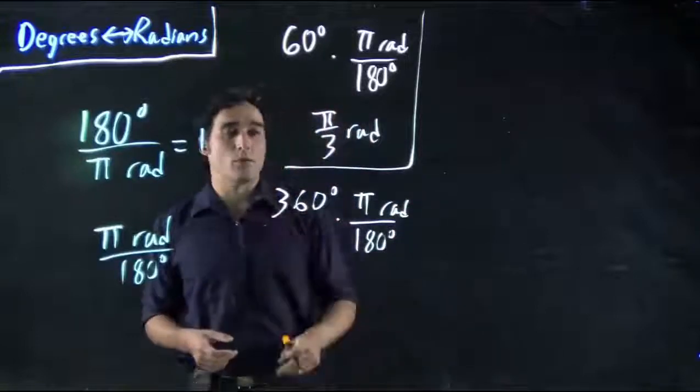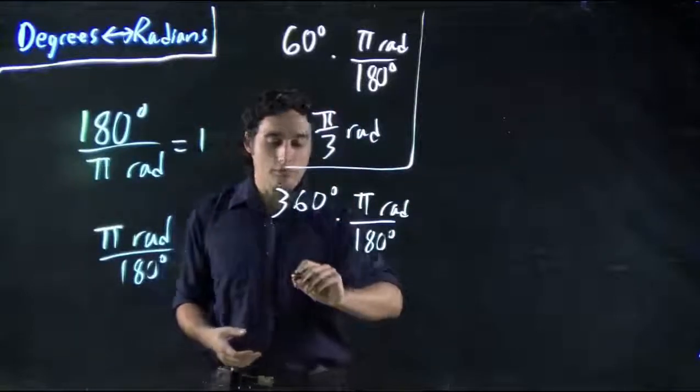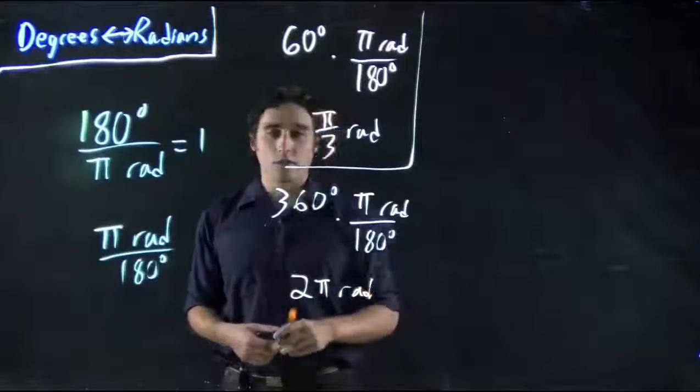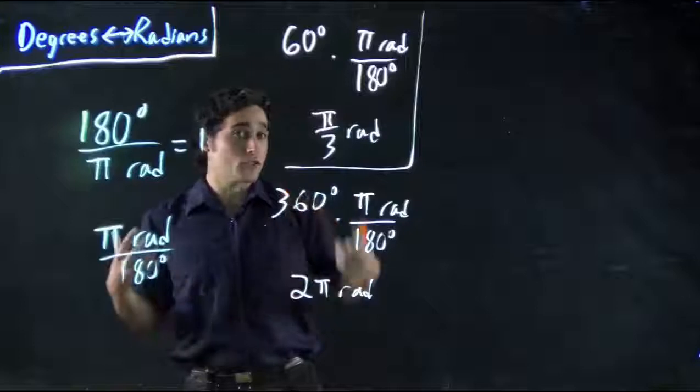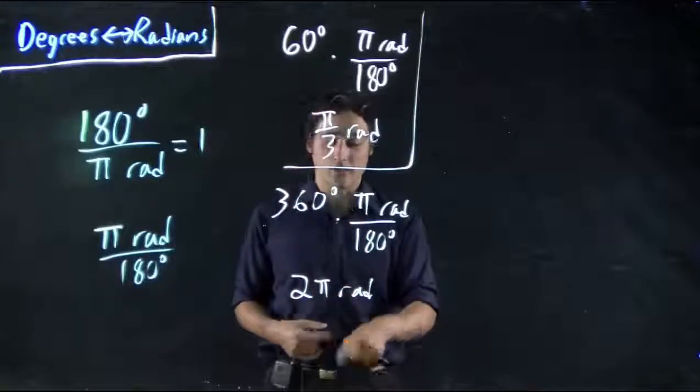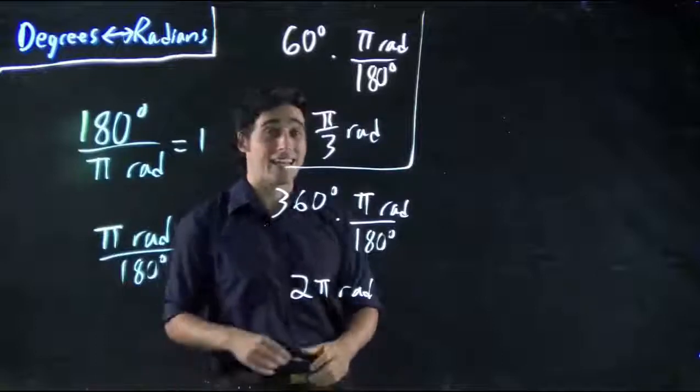In this case, 360 divided by 180, we punch it in, we get 2. 2π radians. One full 360 degrees, one full circle, is the same as 2π radians. These are equivalent. Two different ways of representing the same thing.